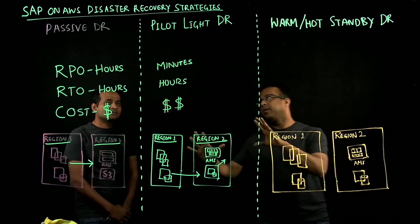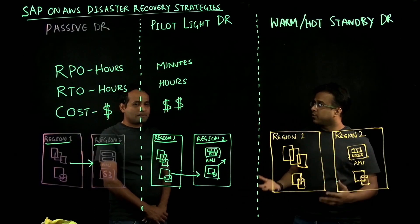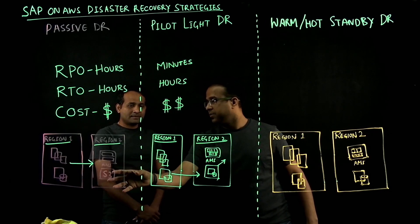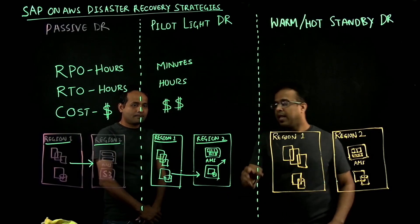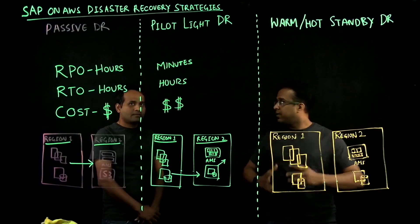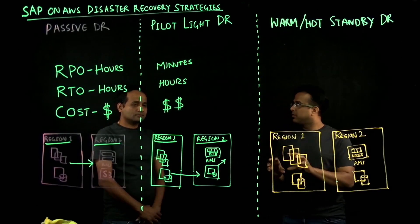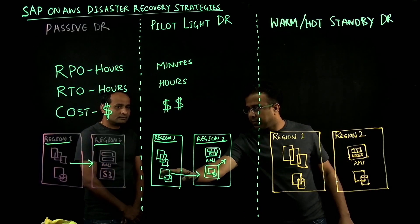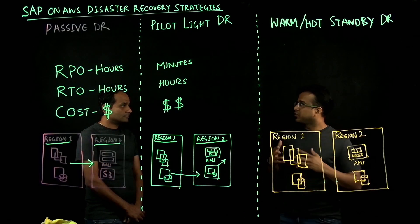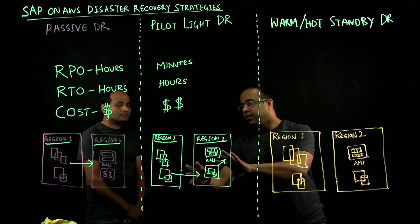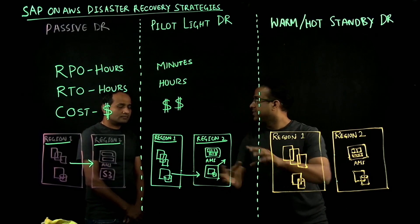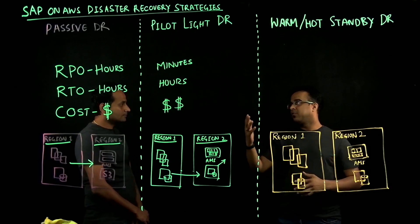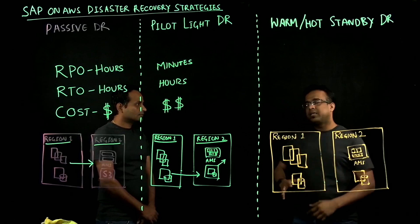If I compare these two scenarios for SAP workloads running on HANA: in the backup restore methodology, you are saving the complete HANA compute cost because you are not running any instances. In Pilot Light, you use a smaller HANA instance to replicate data from primary to secondary, saving cost on instance size — and when there is an unplanned event, you can scale this to your actual HANA instance size. This helps give customers flexibility around cost, RPO, and RTO.